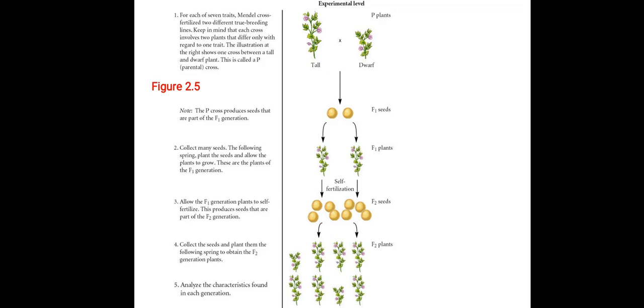Now, we shall analyze these characteristics by the conceptual level. As you can see here in the picture that the tall and the dwarf plants are represented by capital T capital T and small t small t respectively. In the F1 generation, all the progeny we got were tall hybrids. And after the self-fertilization, we get pure line tall, pure line dwarf and two hybrid tall.